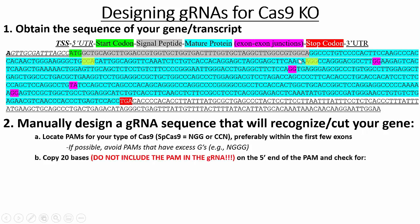Then you want to copy twenty bases that are on the five prime end of the PAM. If you're using an NGG PAM, the gRNA sequence is going to be the twenty bases to the left. If you're using a CCN, then it's twenty bases to the right, because we're talking about the opposite strand. Notice that I'm differentiating between the gRNA sequence and the PAM — you do not want to copy the PAM in your gRNA sequence. It will not work if the PAM is included.